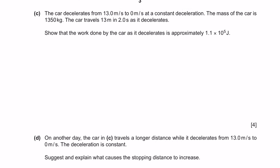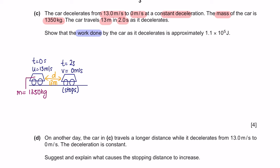Question C: the car decelerates from 13 meters per second to 0 at constant deceleration. The mass of the car is 1350 kilograms. The car travels 13 meters in 2 seconds as it decelerates. Show that the work done is approximately 1.1×10⁵ joules. At time 0 until 2 seconds, the speed decreases from 13 m/s to 0. We need to identify the formula: work done equals force times distance.